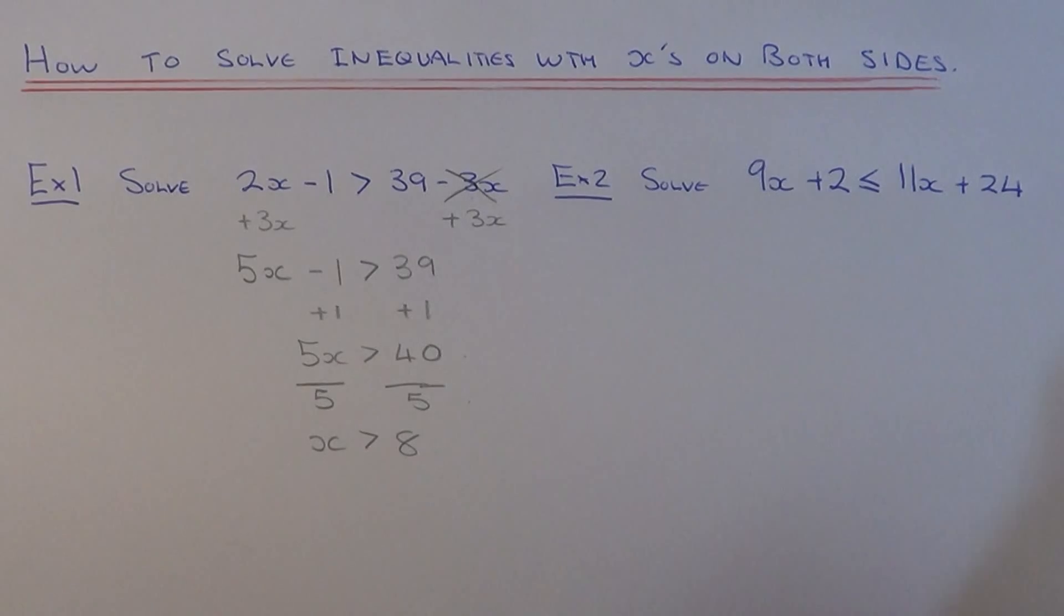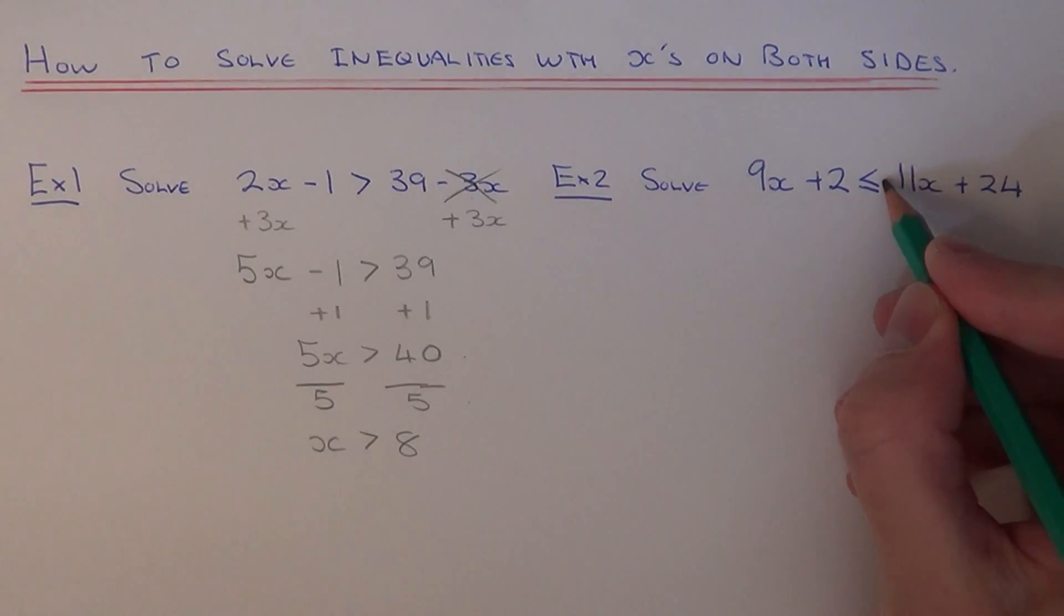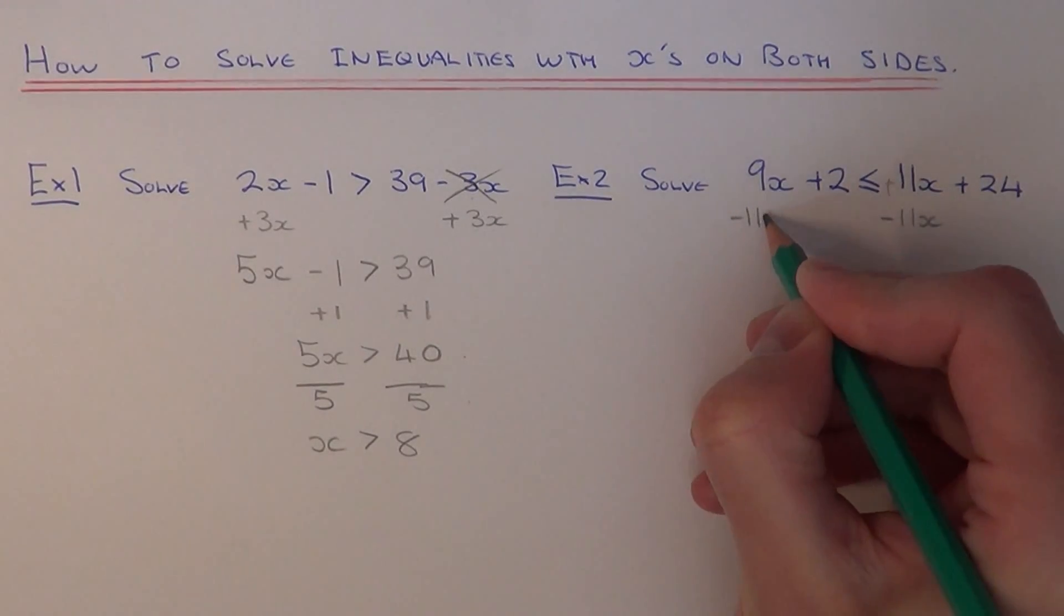So let's have a look at example 2 then. This time we've got to solve the inequality 9x plus 2 is less than or equal to 11x plus 24. So again, let's get rid of the x terms on the right-hand side of the inequality. This time we've got plus 11x, so the inverse is to subtract 11x from both sides.